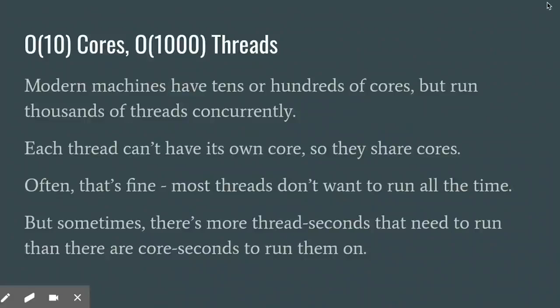Thread scheduling is a logistical problem. In modern machines, there are a lot of cores, but there are far more threads that want to run on those cores, so they have to share. Often that's fine, but sometimes, particularly in the kinds of servers that we all work on, it's a source of performance problems.